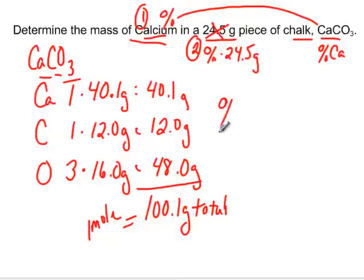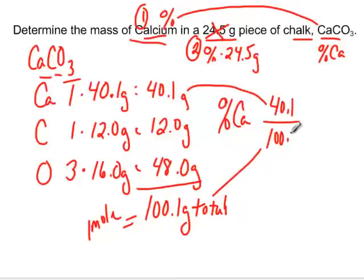Now we're going to figure out the percent of calcium in this compound. We take the mass that's calcium, 40.1, and we divide it by the whole thing, 100.1. And if we do that, multiply it by 100, of course. If we do that, we realize 40.1 divided by 100.1 times 100. These numbers basically cancel out. And it comes out to 40.1% calcium.